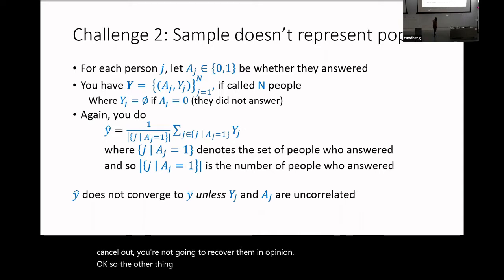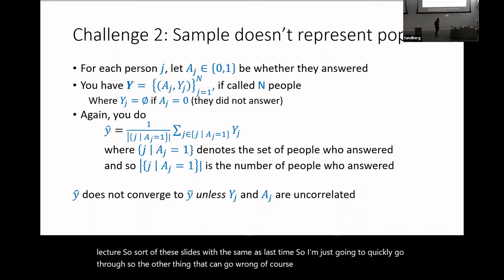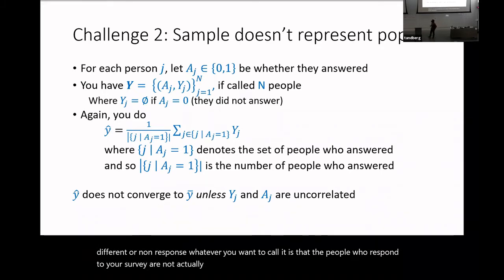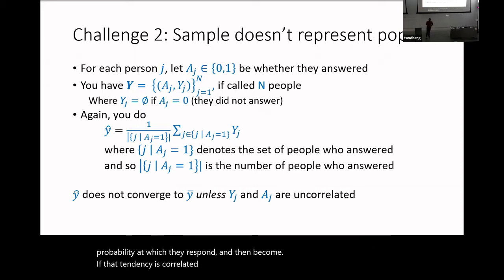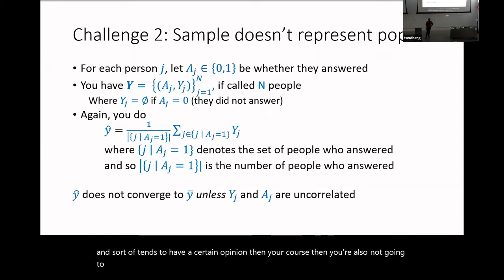The other thing that can go wrong — and that's going to be the focus of today's lecture — is selection bias or differential non-response: the people who respond to your survey are not actually the population you care about. Each person has some probability at which they respond, and if that tendency is correlated with opinions, you're not going to recover the true opinion. In this lecture, we're going to look at weighting techniques to solve that second challenge.